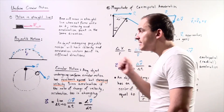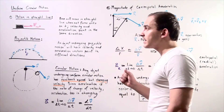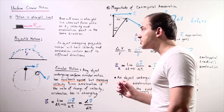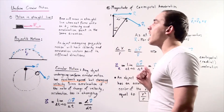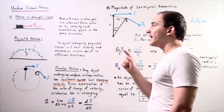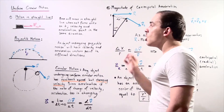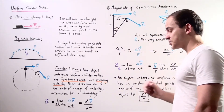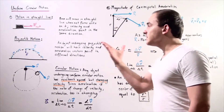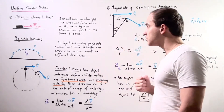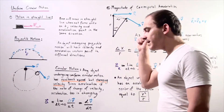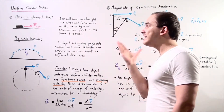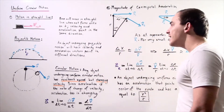The velocity vector and the acceleration vector of that box will point in the same exact direction. That box will move in a straight line along our x-axis whenever a net force acts on it, meaning the velocity and acceleration vectors point in the same exact direction. This is objects moving in one dimension along one axis.